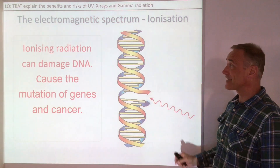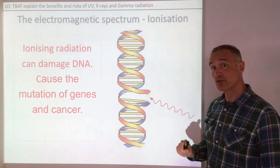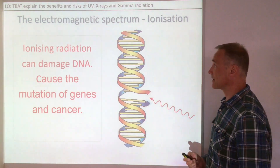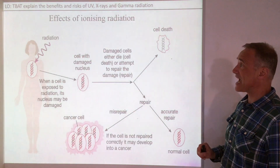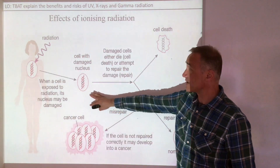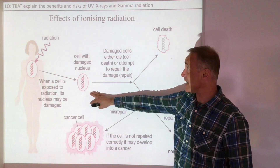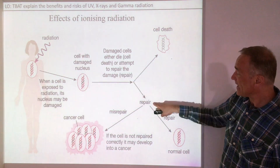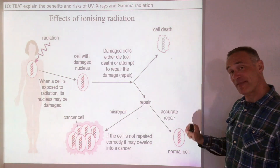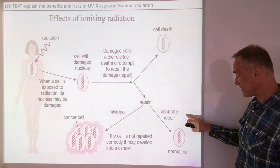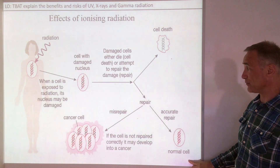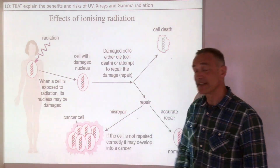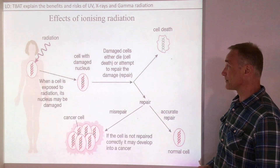Ionization can damage DNA which causes mutations in cells and in genes, which can cause cancer. There are a number of things that can happen when cells are damaged: one, the cell can die; or it can repair itself — if it repairs itself accurately then it carries on as a normal cell, but if it doesn't repair itself accurately then it can lead to cancerous cells.